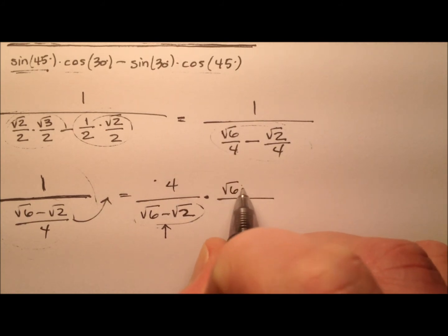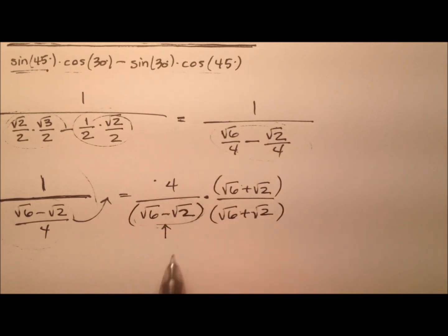So we'll use √6 plus √2 and multiply that top and bottom. We'll get parentheses around both terms.